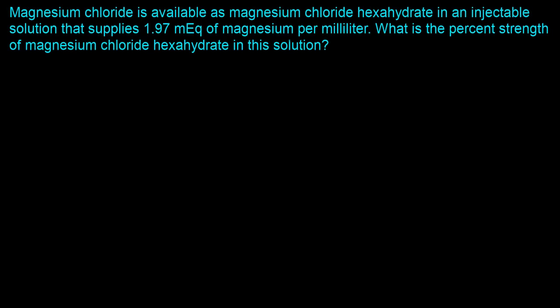The question says: Magnesium chloride is available as magnesium chloride hexahydrate in an injectable solution that supplies 1.97 milliequivalents of magnesium per milliliter. What is the percent strength of magnesium chloride hexahydrate in this solution?